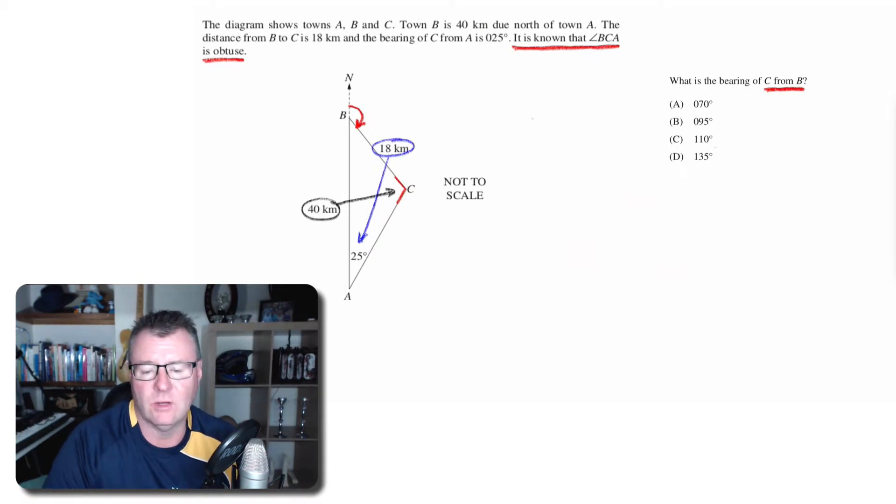So I can go ahead and do this: 18 over sine of its opposite equals 40 over the sine of its opposite, which happens to be sin C. And that's great—I've only got one unknown and now I've got two fractions with an equals sign.